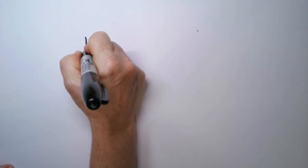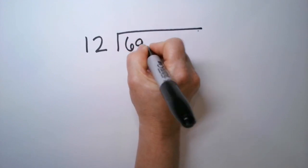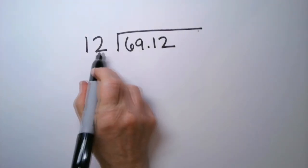So rewriting the problem it's going to be a 12 into 69.12. And now I can do my division. This is exactly like long division with whole numbers.